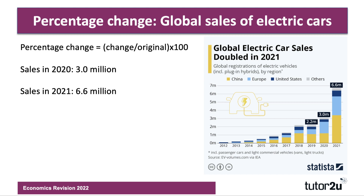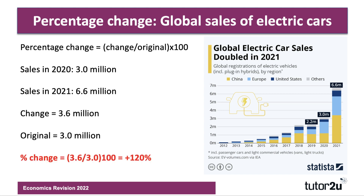Percentage change in car sales from 2020 to 2021: the original sales were 3 million, and they jumped to 6.6 million — a change of 3.6 million in just one year. The original value in 2020 was 3 million, so the percentage change is 3.6 divided by 3, times 100, which is plus 120%. Keep in mind that if something doubles, it's a 100% change, not 200%. In this case, global car sales increased by 120%.